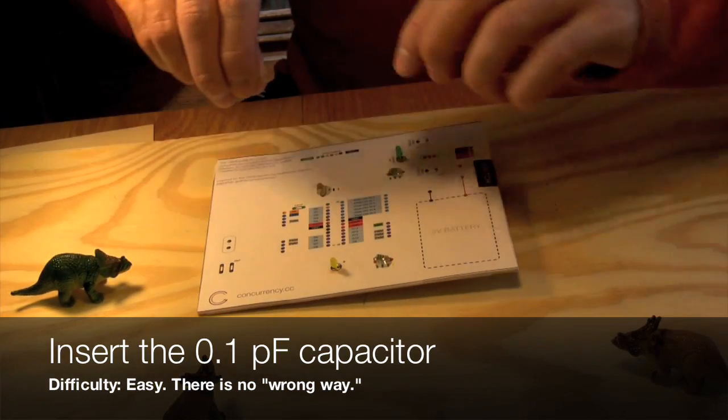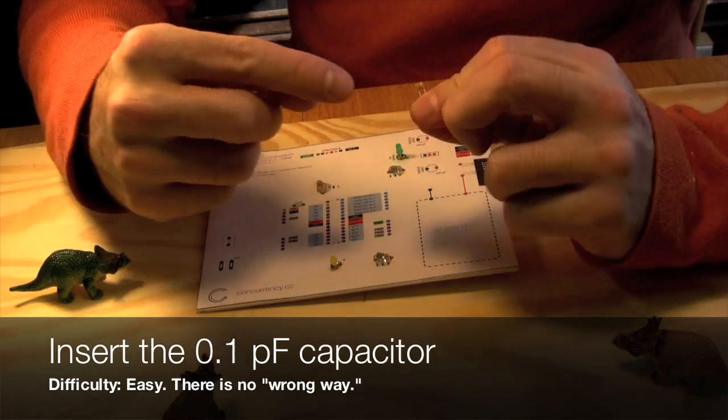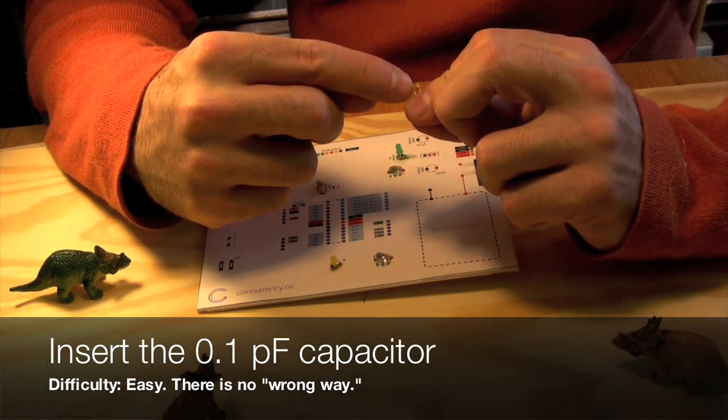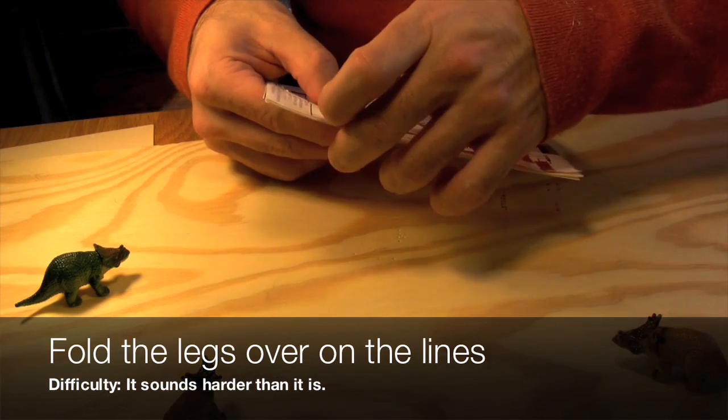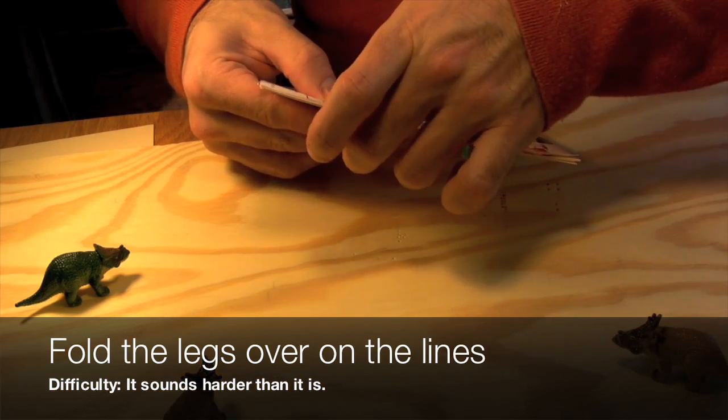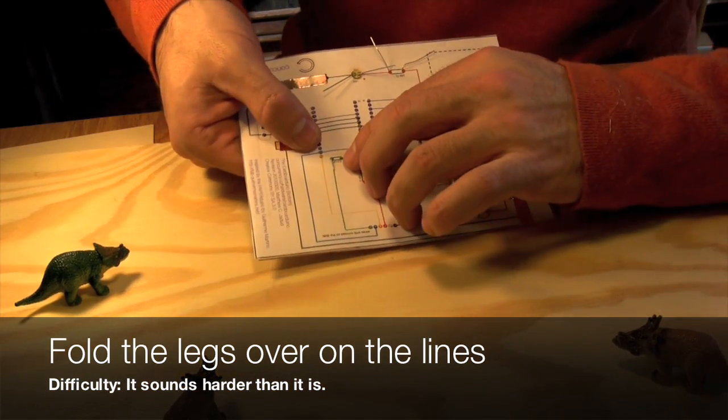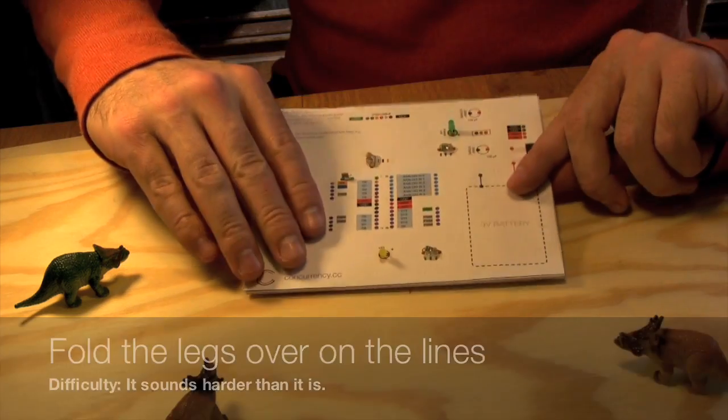The 0.1 picofarad capacitor has neither a positive or negative either. Insert that up by pin 1 and glue it down on the top side of the board. With this capacitor, fold the legs over on the lines. You'll see that we're going to be soldering some things together there and it's a little touchy.